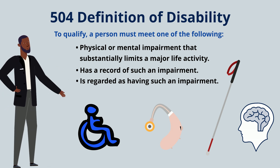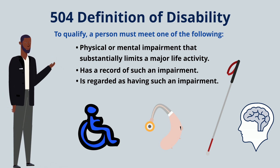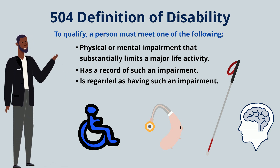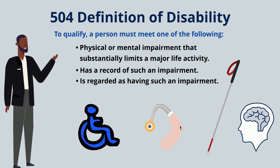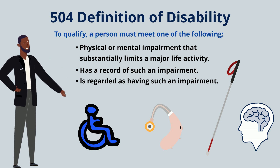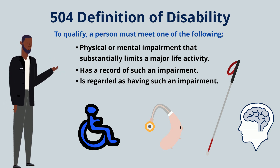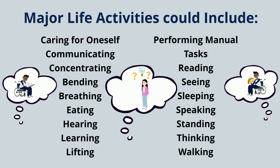Section 504 definition of disability. To qualify, a person must meet one of the following: a physical or mental impairment that substantially limits a major life activity, has a record of such an impairment, or is regarded as having such an impairment. Major life activities could include caring for oneself, communicating, concentrating, bending, breathing, eating, hearing, learning, lifting, performing manual tasks, reading, seeing, sleeping, speaking, standing, thinking, or walking.